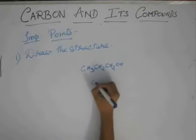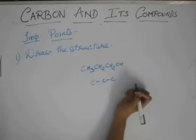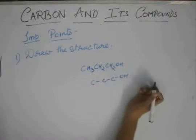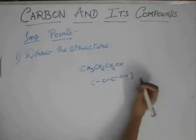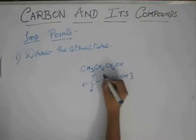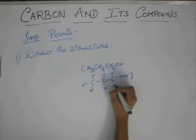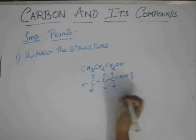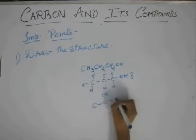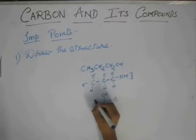So first of all draw the skeleton C-C-C, put the OH over here, this is one structure and you will see that it is CH3CH2CH2OH only. And there can be one more structure where the OH is here.